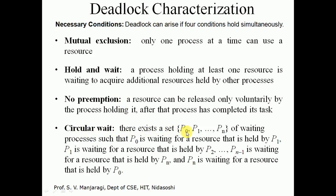The fourth condition is circular wait. There exists a set of waiting processes P0, P1, ..., Pn such that P0 is waiting for a resource held by P1, P1 is waiting for a resource held by P2, and so on, with Pn waiting for a resource held by P0. This forms a circular chain where one process is waiting for the next to release a resource. All processes are in the waiting state. If all four conditions hold simultaneously, the system may enter deadlock.